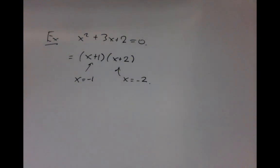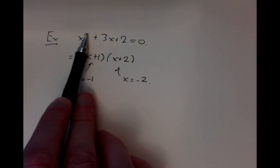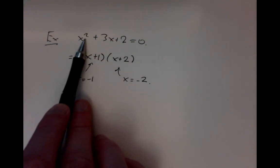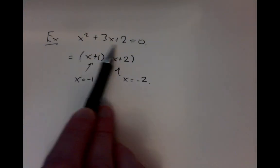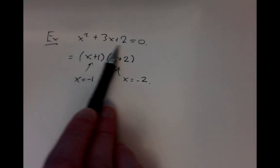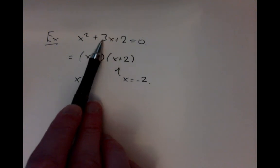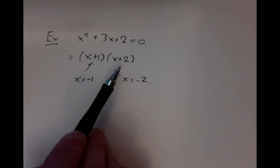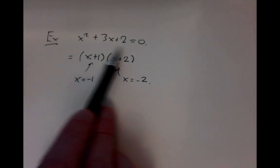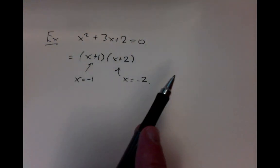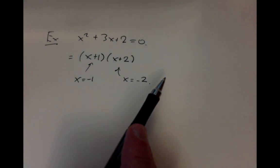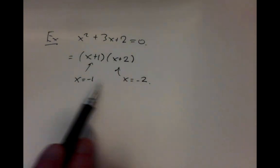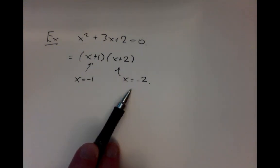It's a quadratic equation, degree 2, where the highest power of x is 2. It's a polynomial equation because it's a sum of terms, each being a constant times a power of the variable. The highest power is 2, so it's a quadratic polynomial, and it has at most two roots. In this case, it has exactly two roots.